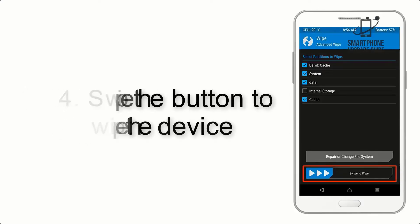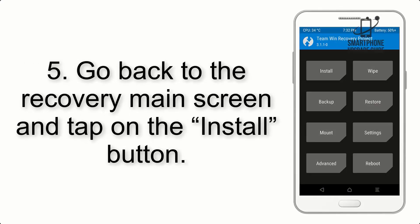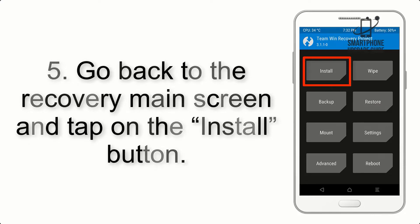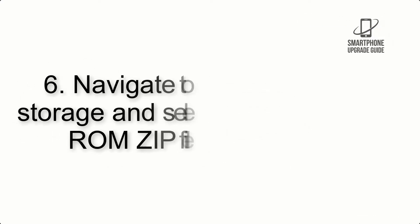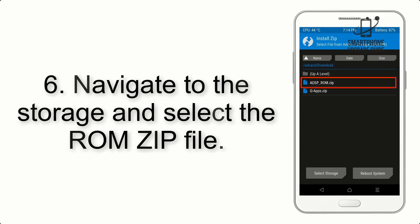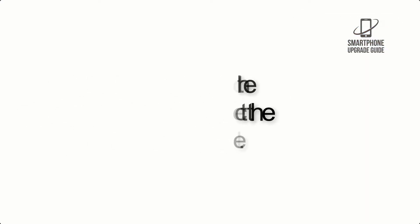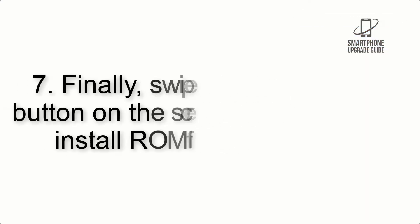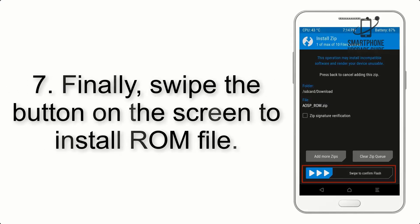Step 4: swipe the button to wipe the device. Step 5: go back to the recovery main screen and tap on the Install button. Step 6: navigate to the storage and select the ROM zip file.